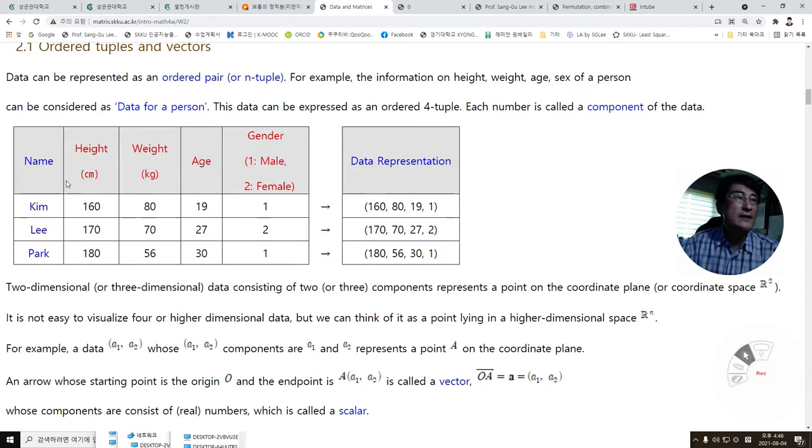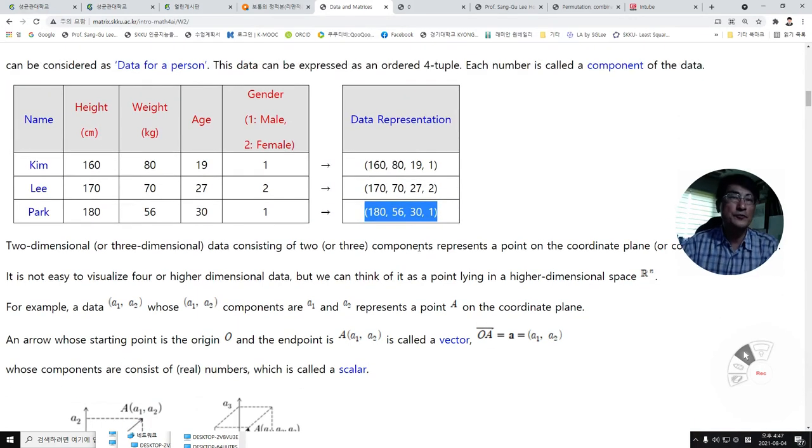Each number in the table is considered a component of the data. In this table, Kim has a height of 160 cm, weight of 80 kg, age 19, and is male. This data can be written as a four-tuple like this. Similarly for Lee and Park.